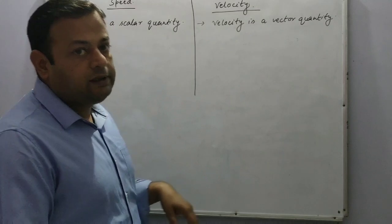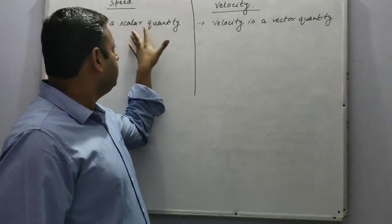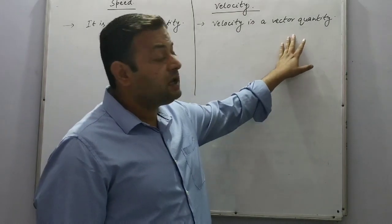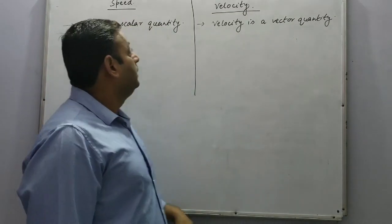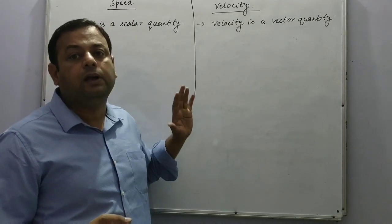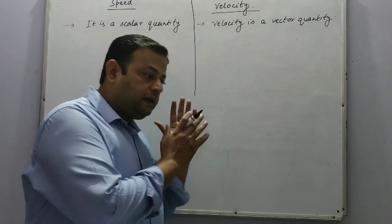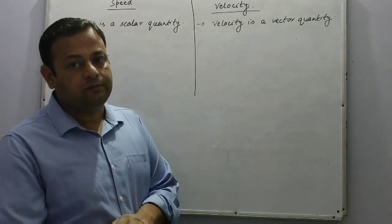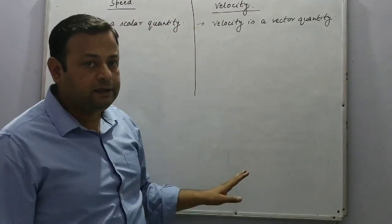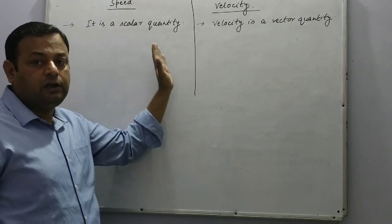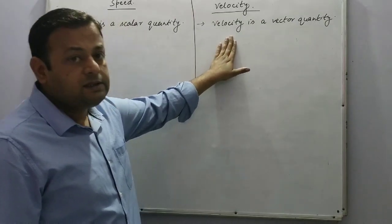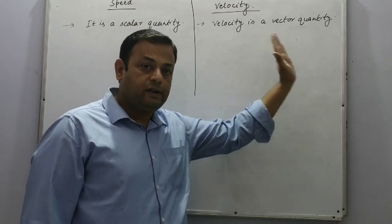What are the scalar and vector quantities? Scalar quantities only have the magnitude, whereas vector quantities have both magnitude as well as direction. For example, a car is moving on the road at a speed of 54 km per hour — not mentioning in which direction the car is moving. Such quantities which have only magnitude are called scalar quantities, whereas vector quantities have both magnitude as well as direction.